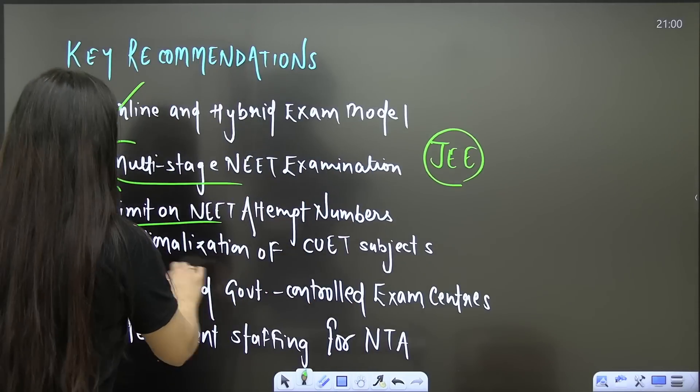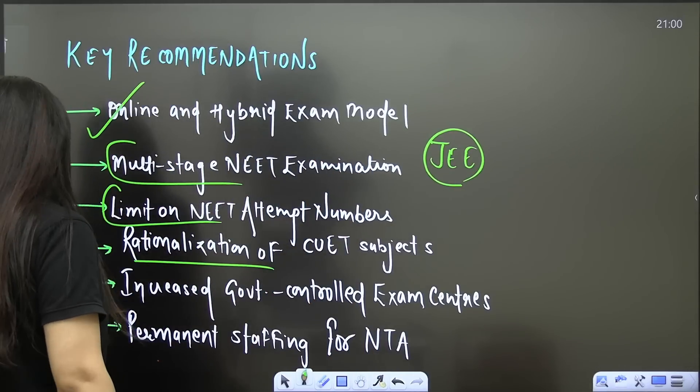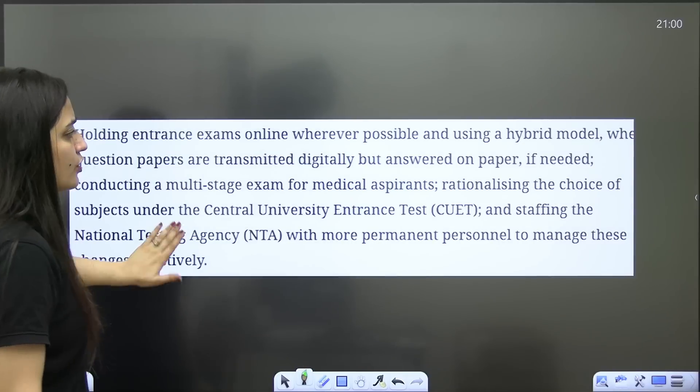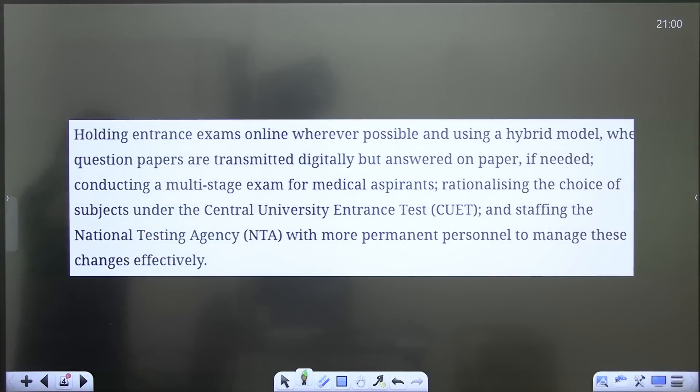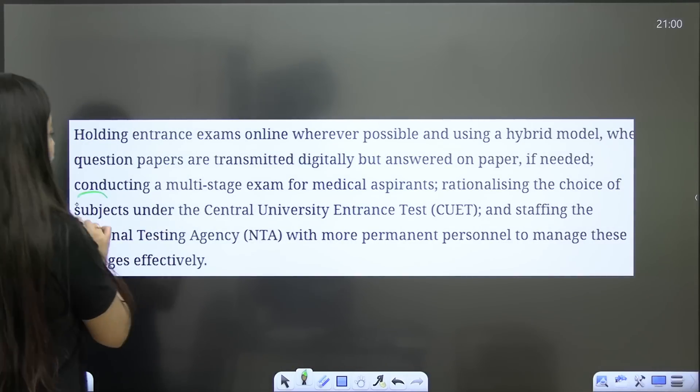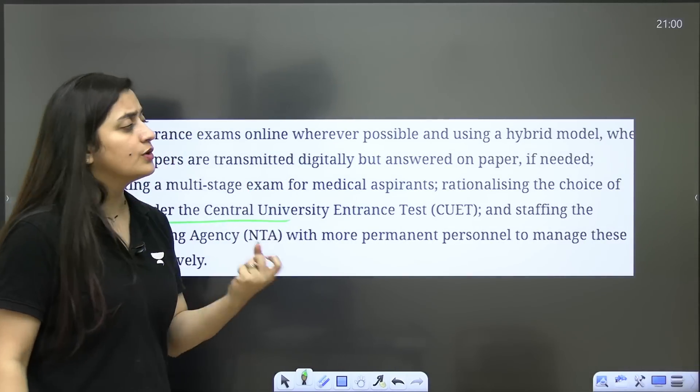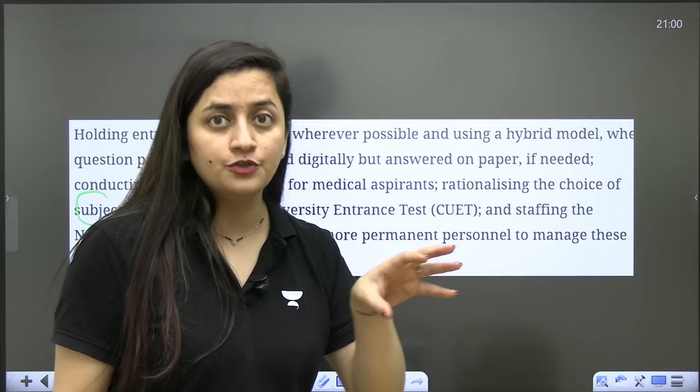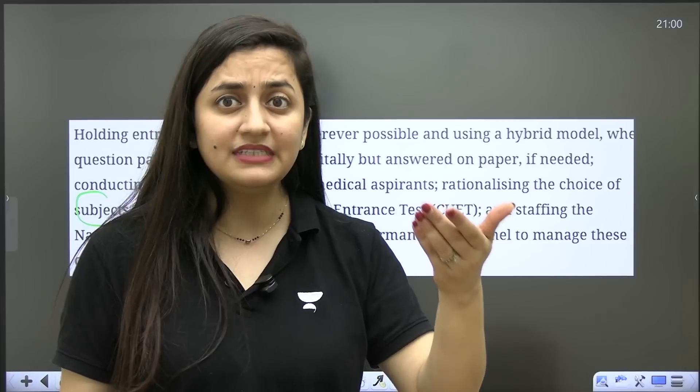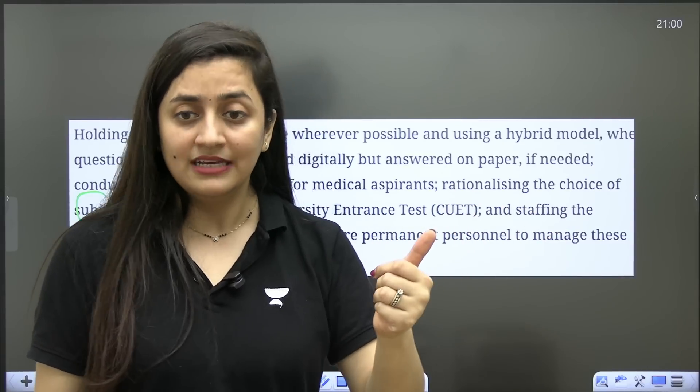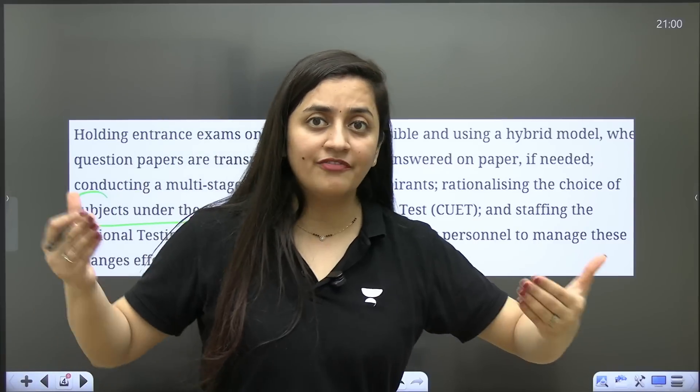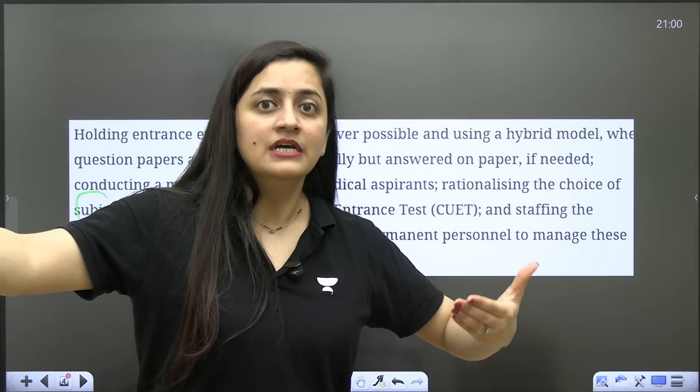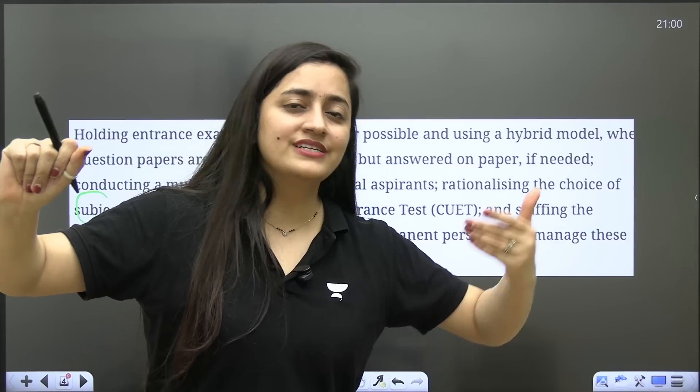Then rationalizing of CUET subjects. When we are talking about the CUET subject, rationalizing the choice of subjects under the Central University Entrance Test. Here the focus should be on the general aptitude and general knowledge, because students have already qualified their respective exams and given the board examination, so accordingly there should be some rationalization in the subjects there.